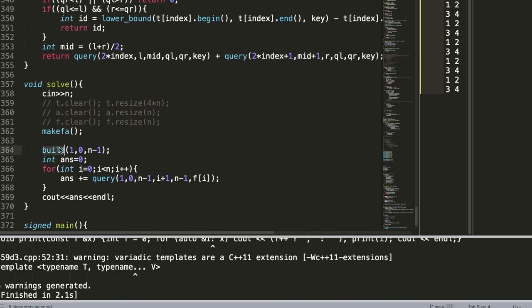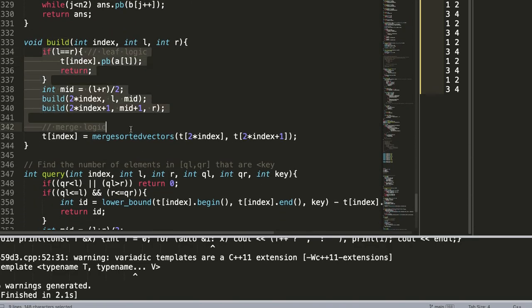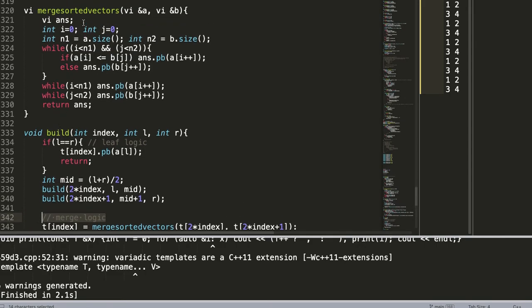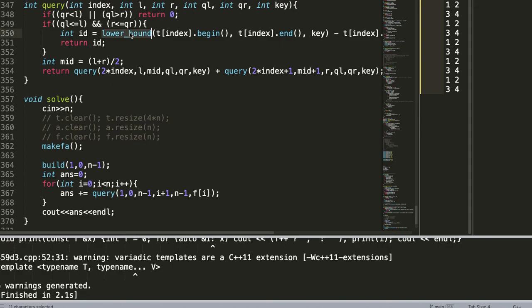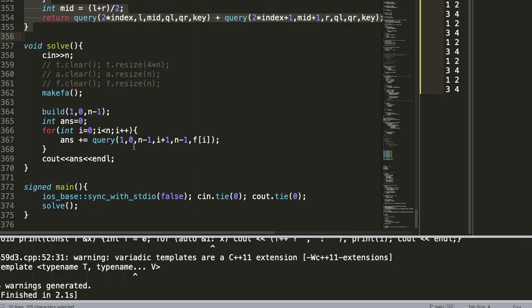Now in build we are building the merge sort tree as follows. The merge logic is simple - it's basically just merging two sorted vectors. In query we are doing a lower bound and reporting the number of elements lower than the key. Query is easy, pretty standard. And we don't need an update in this particular implementation.